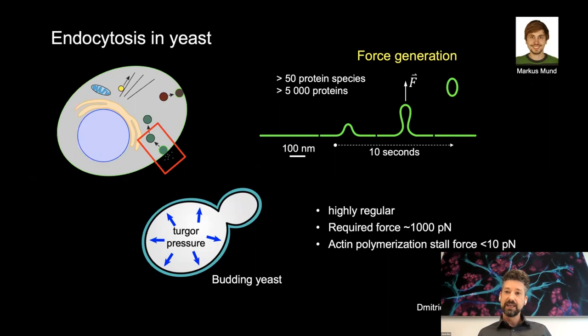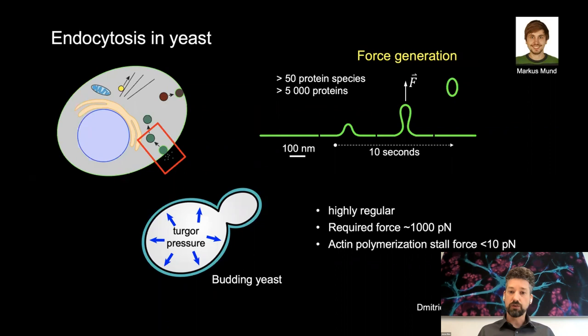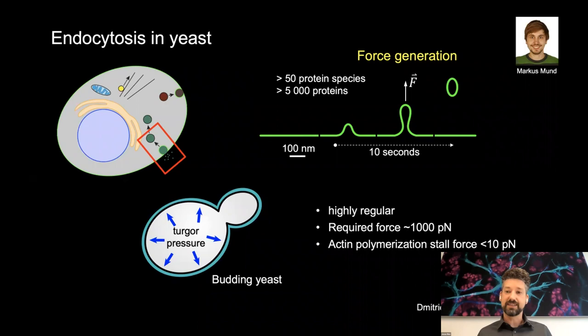We know that in yeast this force is generated by the actin machinery through polymerizing F-actin, but we don't really understand how this can be, because the required force is more than two orders of magnitude higher than the stall force of a single growing actin filament.